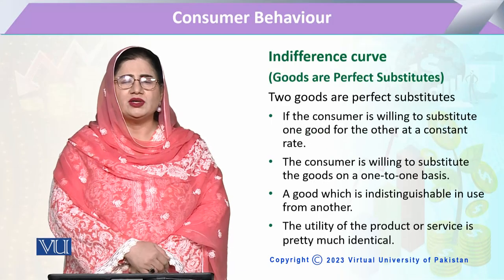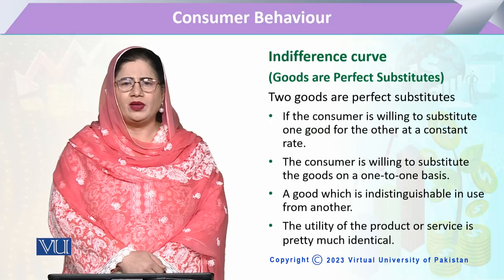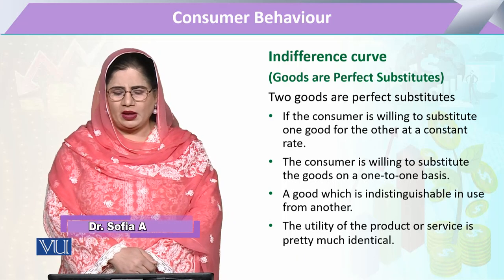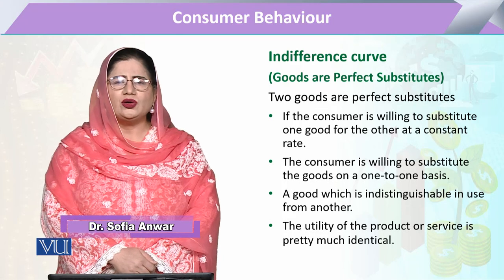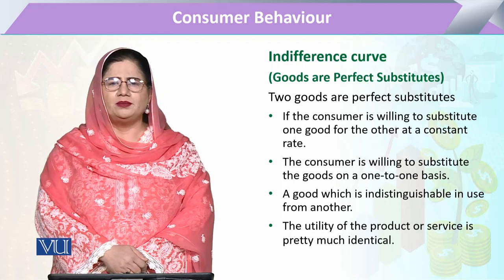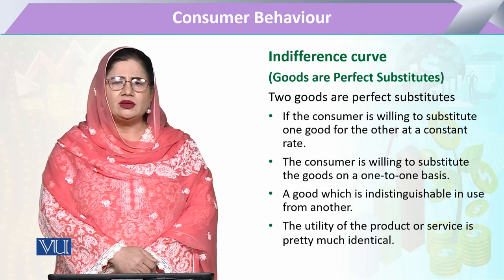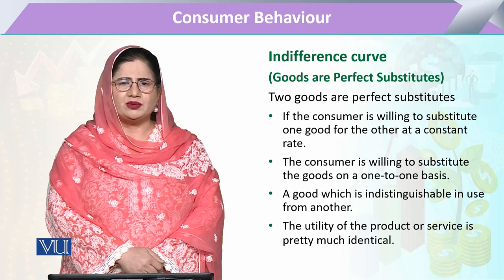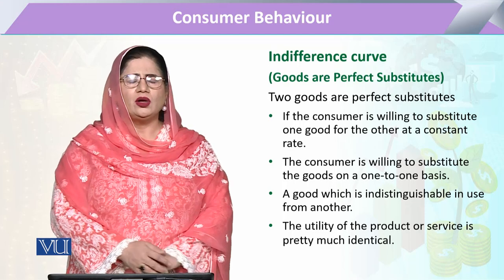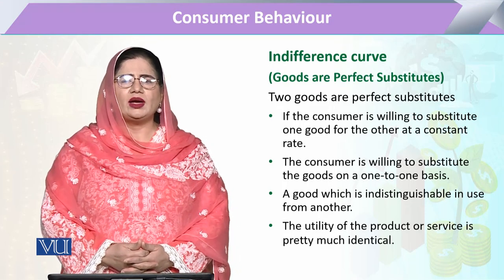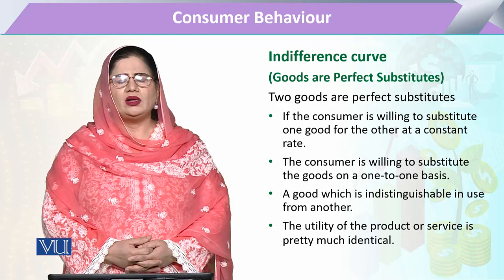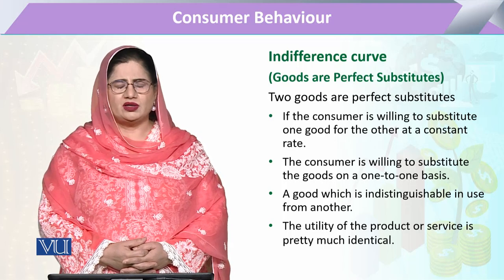We are going to study the indifference curve of the consumer when the goods are perfect substitutes. The nature of commodities can be different — goods can be complements to each other, perfect substitutes to each other, or limited substitutes to each other. Keeping in view this nature, we can derive various types of indifference curves when the consumer is making a consumption decision.